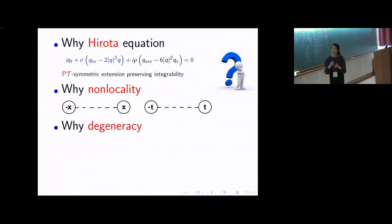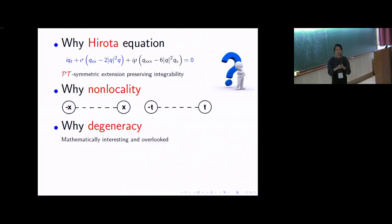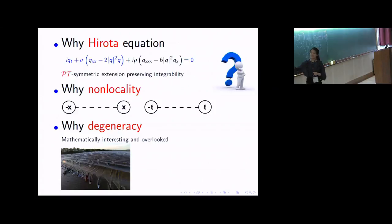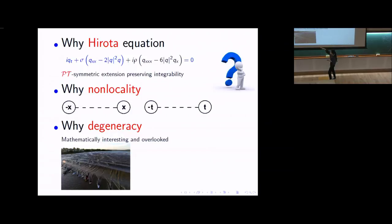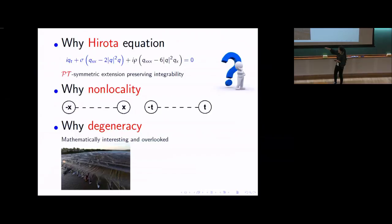Why should we be interested in studying degeneracy? Because it's mathematically interesting and overlooked, and the limiting process for degeneracy is non-trivial. You can also find degenerate solitons in nature. There's a picture from the Amazon showing the famous tidal bore phenomenon, and what you see is a degenerate 10-soliton solution — you have 10 peaks, all of the same amplitude, energy, and speed, traveling simultaneously for hundreds of meters without changing shape or speed.